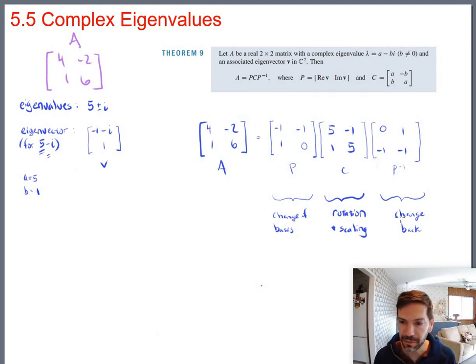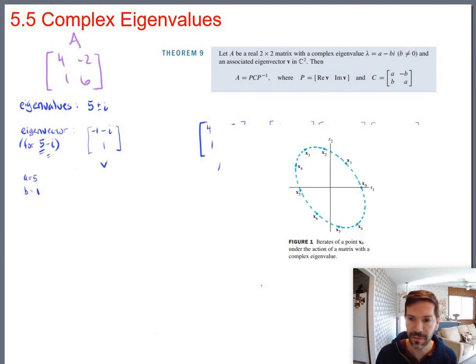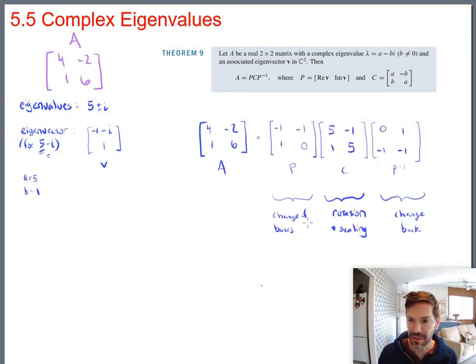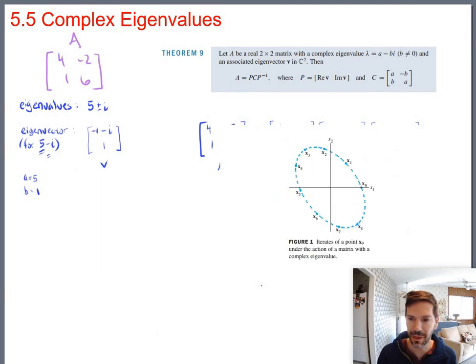So if you look in the book, they have a nice little picture of one of these matrices. This particular one, they set it up so that the scaling factor was one in here. So this C turned out to be a pure rotation in their particular example, and not also scaling. But this is what it looks like.